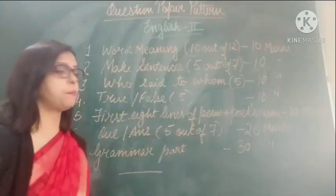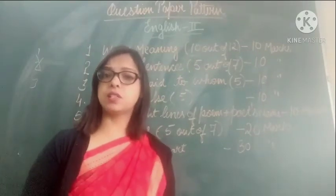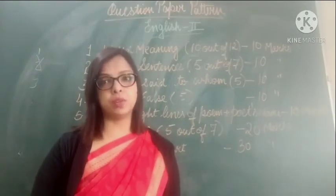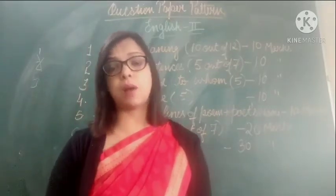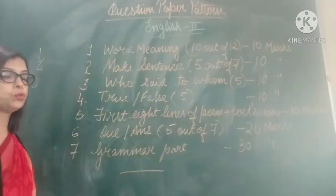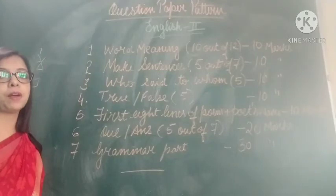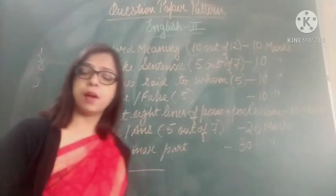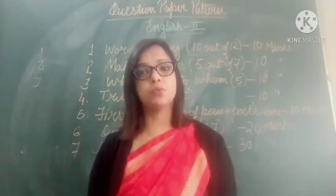Then grammar part. Grammar part will be of 30 marks. It means whatever book exercises are given at the back of each chapter and poem — from that, 30 marks of questions will come. So you have to learn all the book exercises given at the back of each chapter and poem. I hope this question paper pattern is clear to you. You can take a screenshot so that it is easy for you to prepare for the exam.